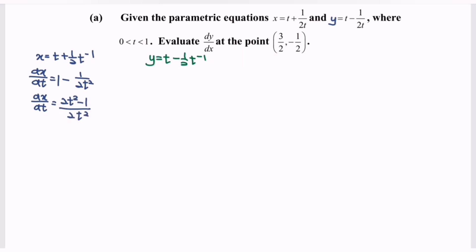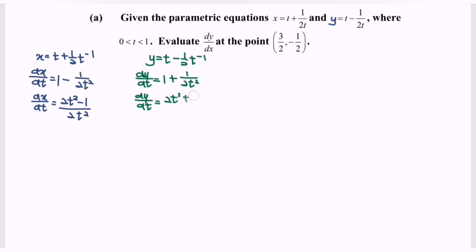Next, focus on y. Differentiate y with respect to t. dy/dt equals 1 plus 1 over 2t squared. Equating the denominator, dy/dt equals 2t squared plus 1 over 2t squared.